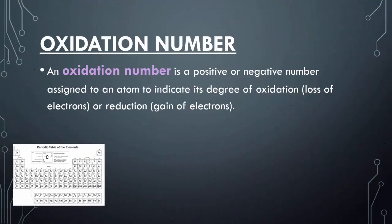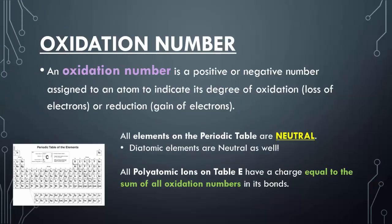Oxidation numbers are positive or negative numbers assigned to an atom to indicate the degree of oxidation, or the loss of electrons, or the reduction, which is the gain of electrons.